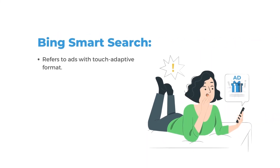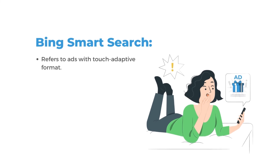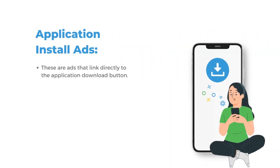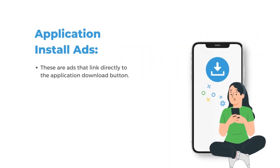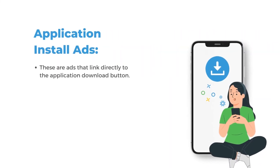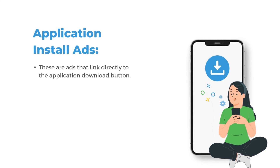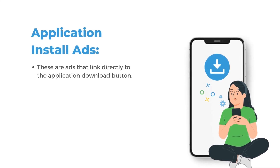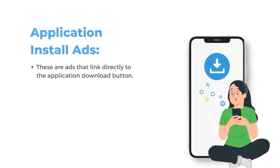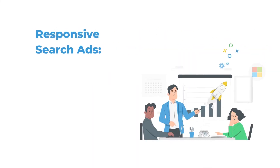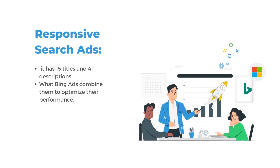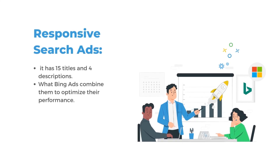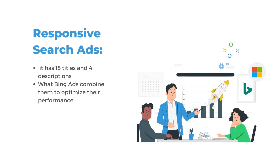Bing Smart Search refers to ads with a touch adaptive format. Application Install Ads are ads that link directly to the application download button.